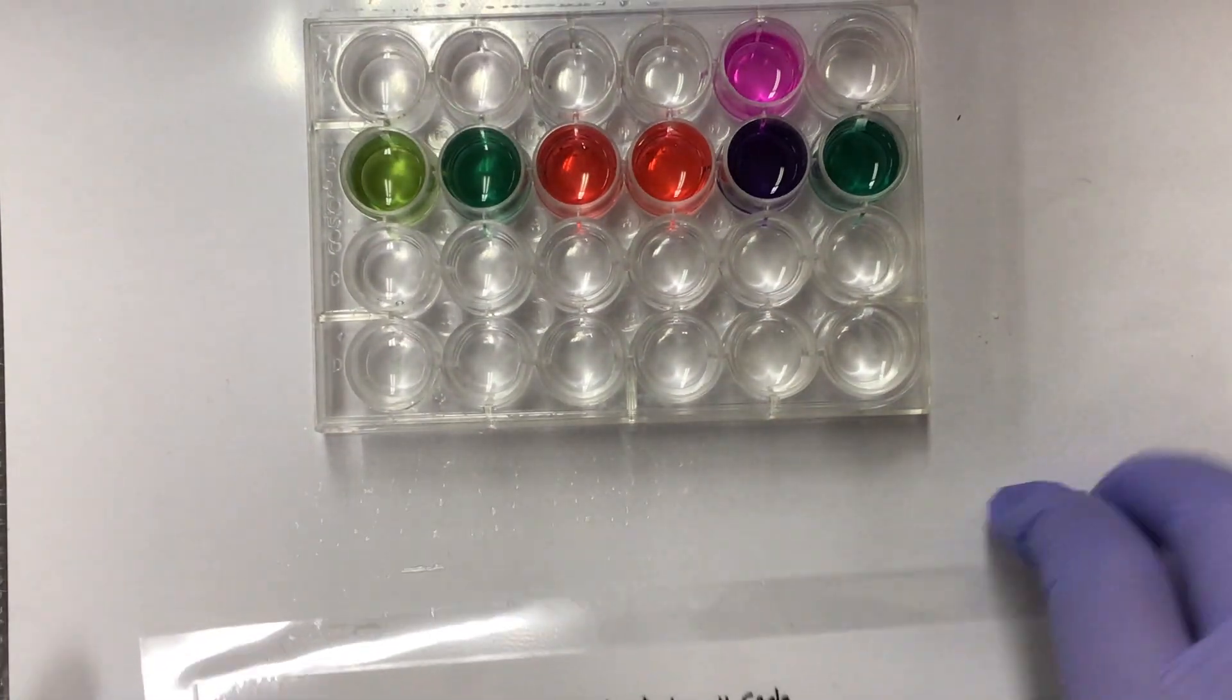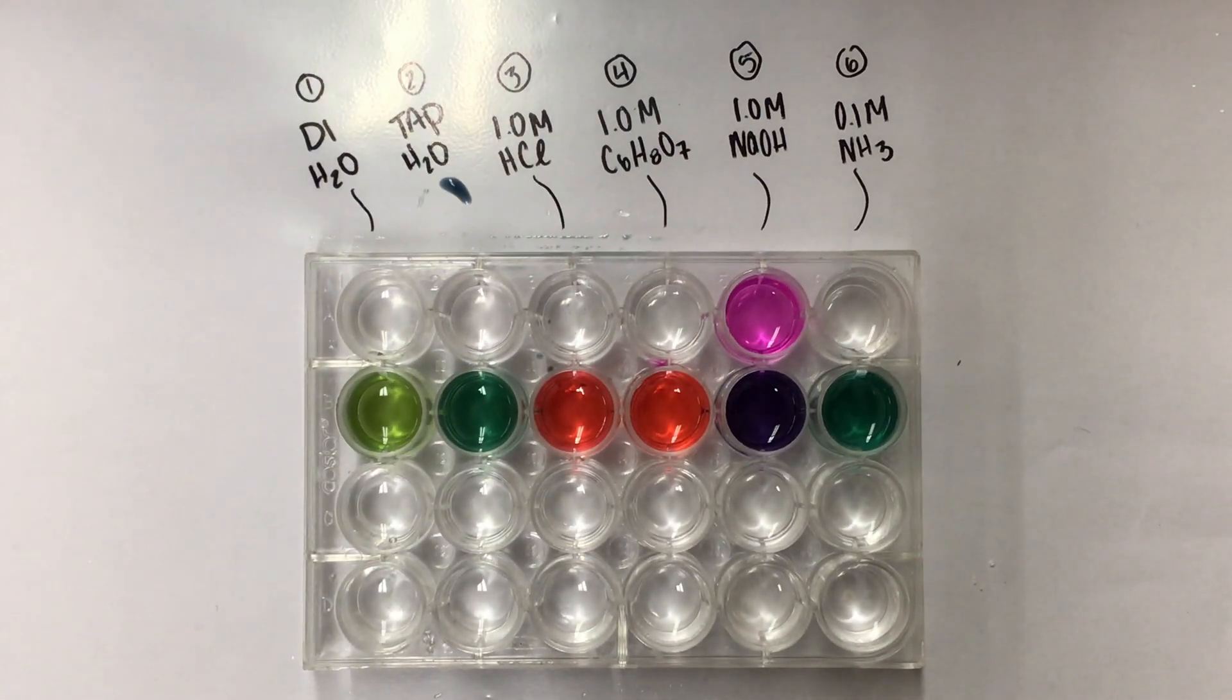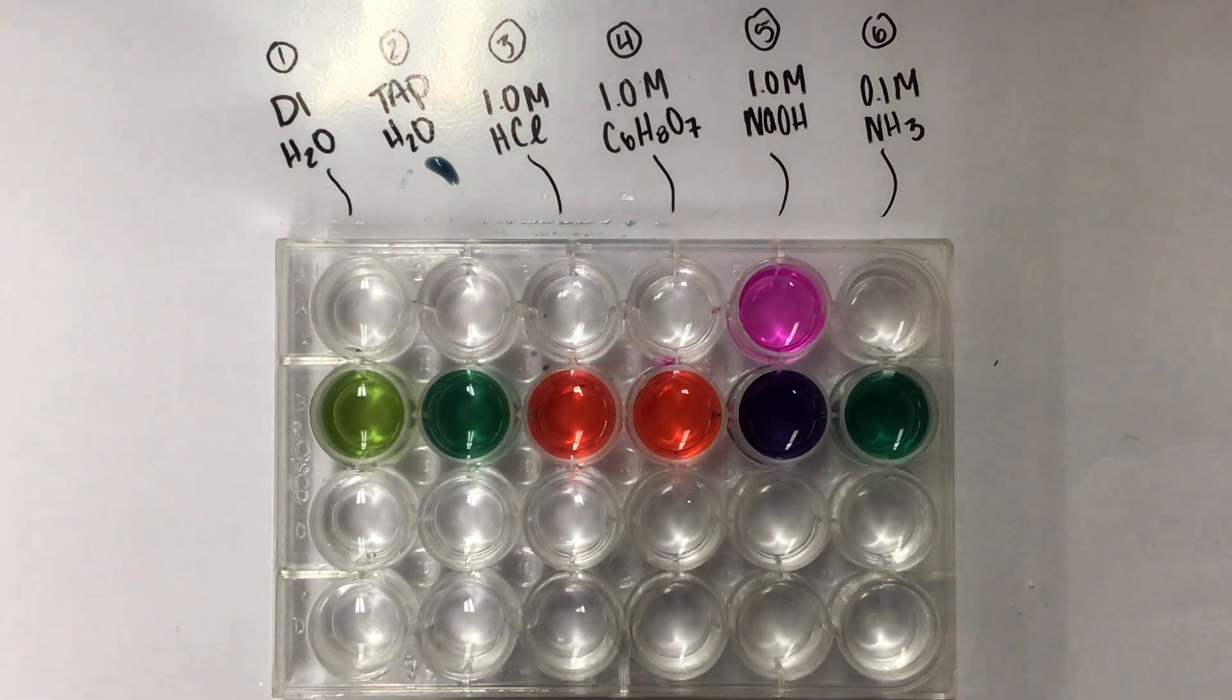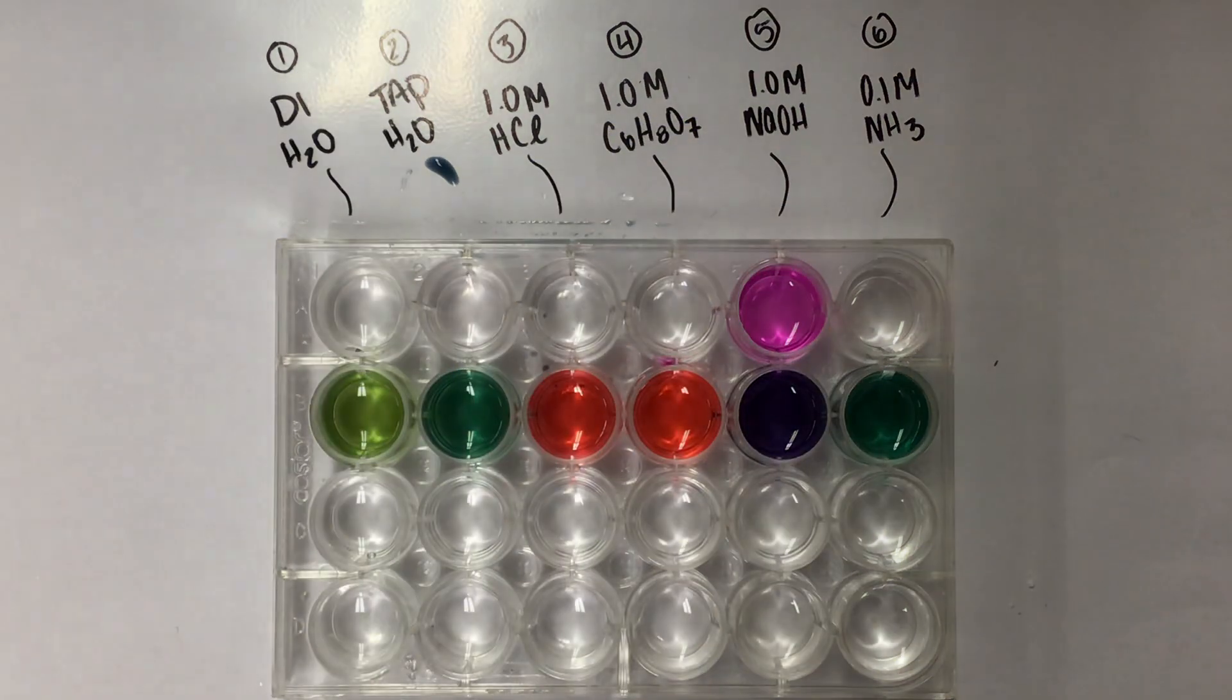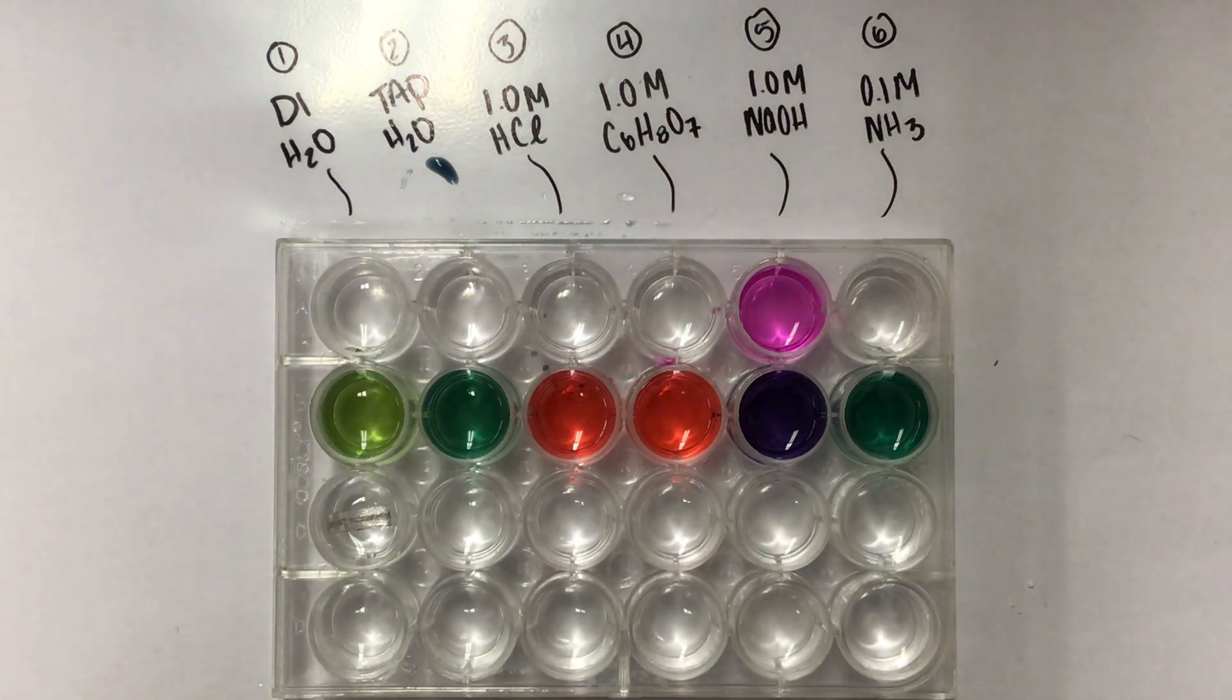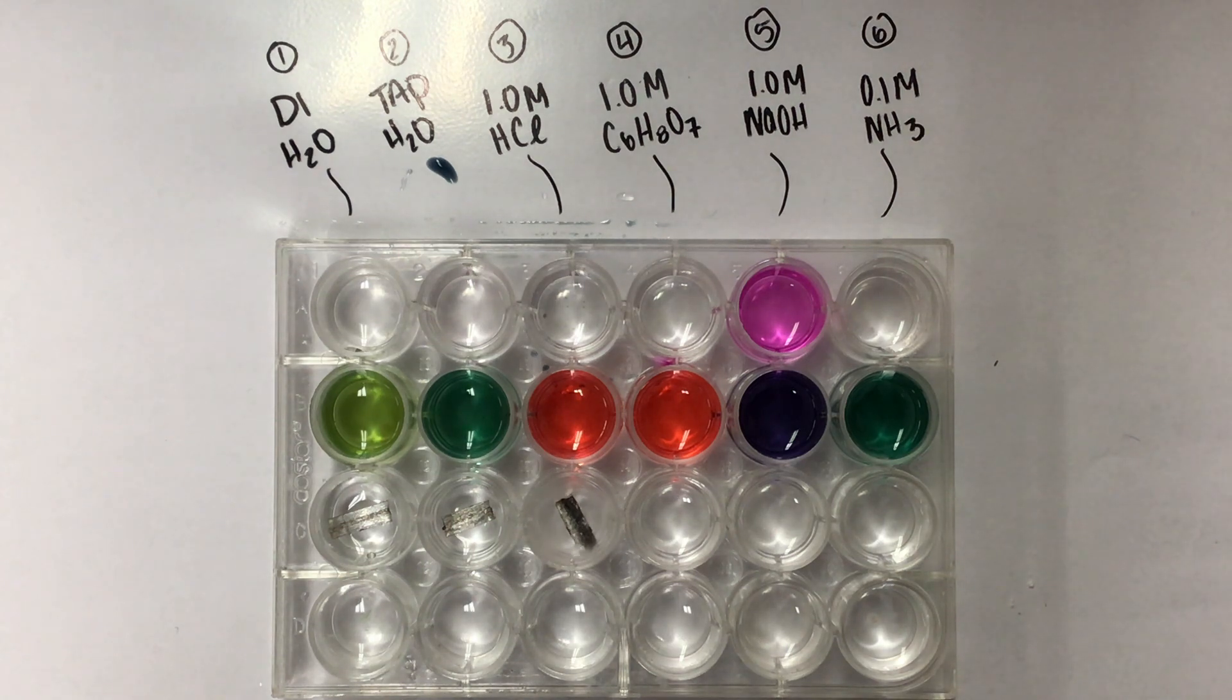In the third well we're going to test the reactivity of these different substances with a piece of magnesium metal. The magnesium metal is coming in these little ribbons right here. I'm just going to take one small piece of it, drop it into each of the wells. Hopefully you can hear some of that sizzling, some of that bubbling.